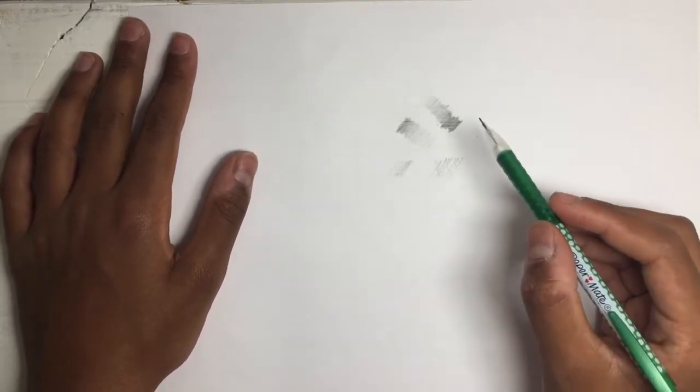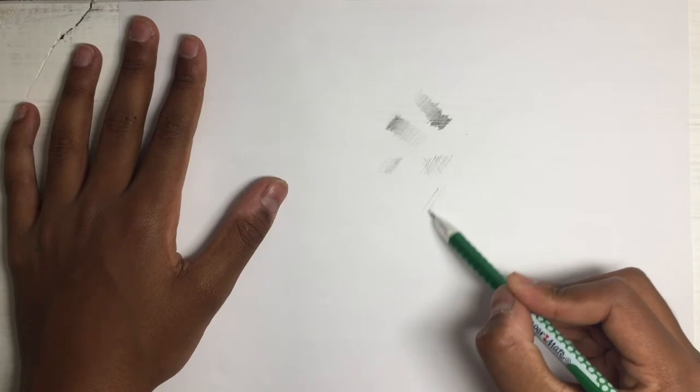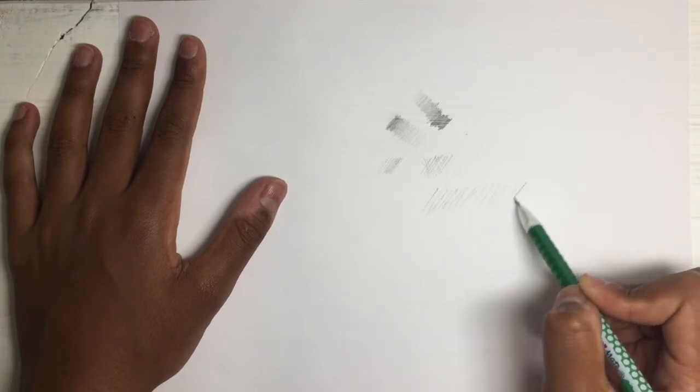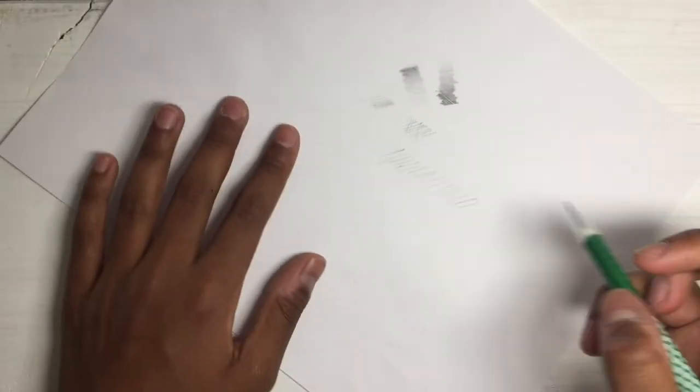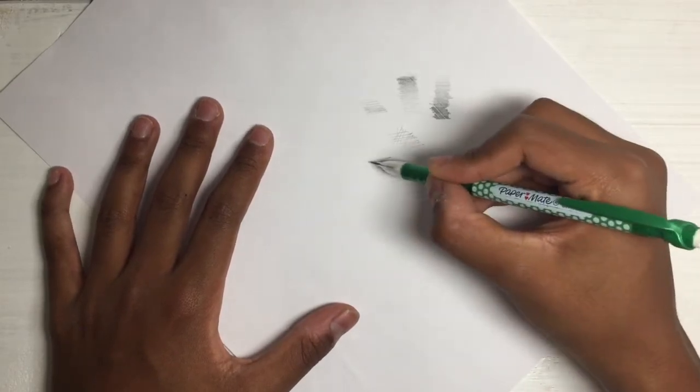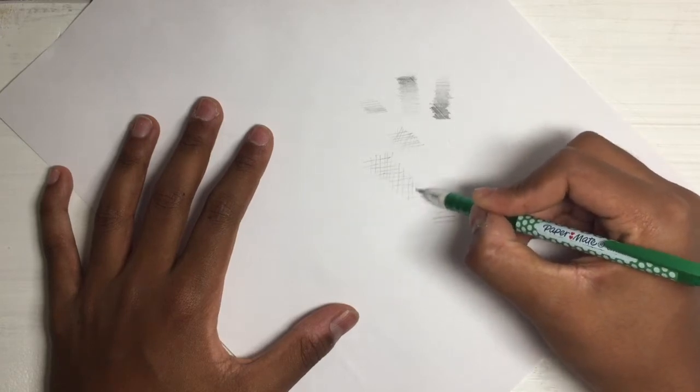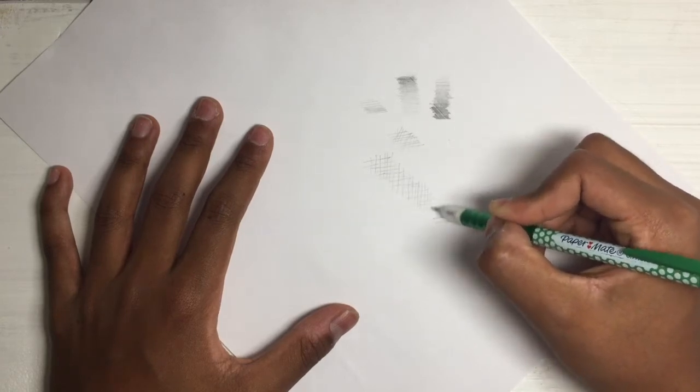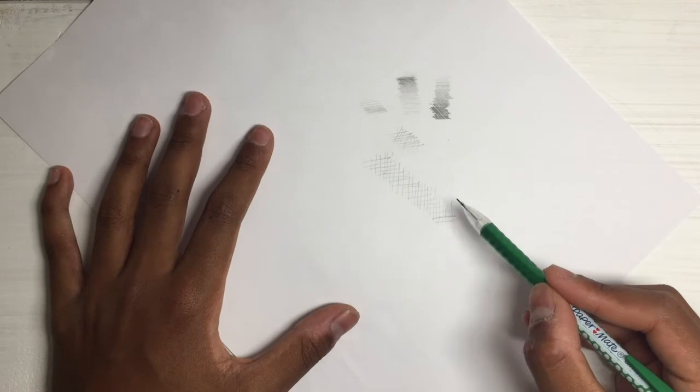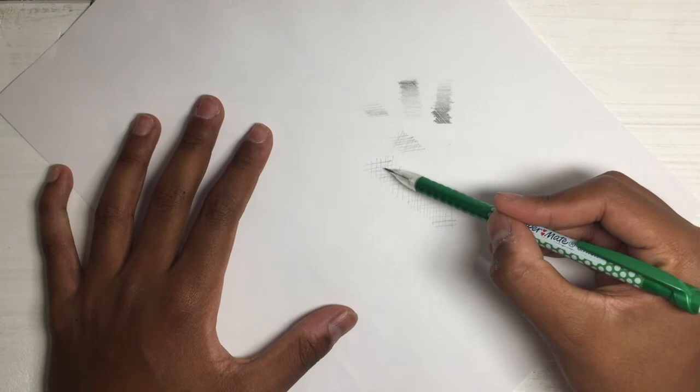I'm going to demonstrate how to cross hatch in the same manner that I have done here. We're going to put down a bunch of base lines here that we can work off of. Now we can turn the paper for ease of use and then start over here and put in our perpendicular lines. Now you may be wondering how do we get it progressively darker across this entire surface, and to do that we just make the lines closer together on this end and further apart on this end.